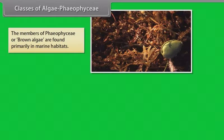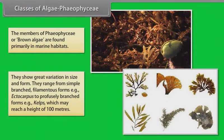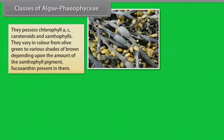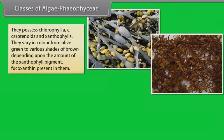Phaeophyceae. The members of Phaeophyceae or brown algae are found primarily in marine habitats. They show great variation in size and form. They range from simple branched filamentous forms, example Ectocarpus, to profusely branched forms, example kelps, which may reach a height of 100 meters. They possess chlorophyll A, C, carotenoids and xanthophylls. They vary in color from olive green to various shades of brown depending upon the amount of xanthophyll pigment fucoxanthin present in them.